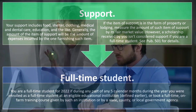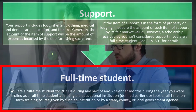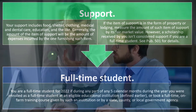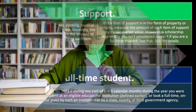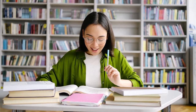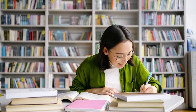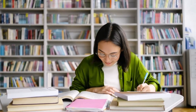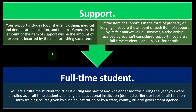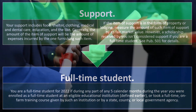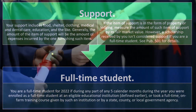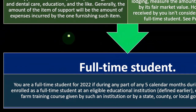Full-time student: note that we're discussing full-time student status here not because it's a requirement to claim the credit, but because being a full-time student may be one of the requirements to determine if you could be claimed as a dependent. If you're still under 24 and a full-time student, you could still be claimed as a dependent if all other dependency tests are met. You are a full-time student for 2022 if, during any part of any five calendar months during the year, you were enrolled as a full-time student at an eligible educational institution, or took a full-time on-farm training course given by such an institution or by a state, county, or local government agency.